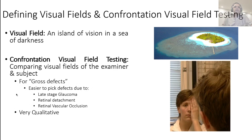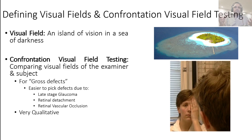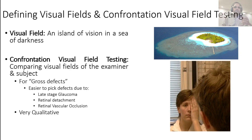Although this is a very crude method, just like digital tonometry, it can be useful to pick up gross defects and large defects — something you will find with retinal detachment, vascular occlusion, or late-stage glaucoma. It is qualitative in the sense that you're detecting whether the patient can or cannot see. It's not very useful in modern diagnostics, but just like digital tonometry, when you have nothing else, this can be your best friend for larger defects and later-stage glaucoma.